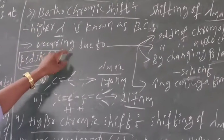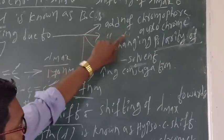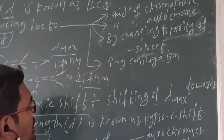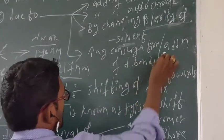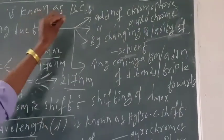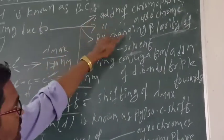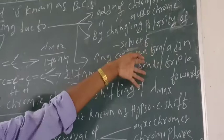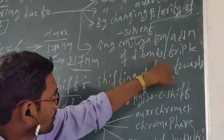How does bathochromic shift occur? It occurs due to: addition of a chromophore, addition of an auxochrome, changing the polarity of the solvent, increasing the conjugation, or addition of double bonds or triple bonds. All these reasons cause shifting of lambda max towards higher wavelength — that is, bathochromic or red shift.